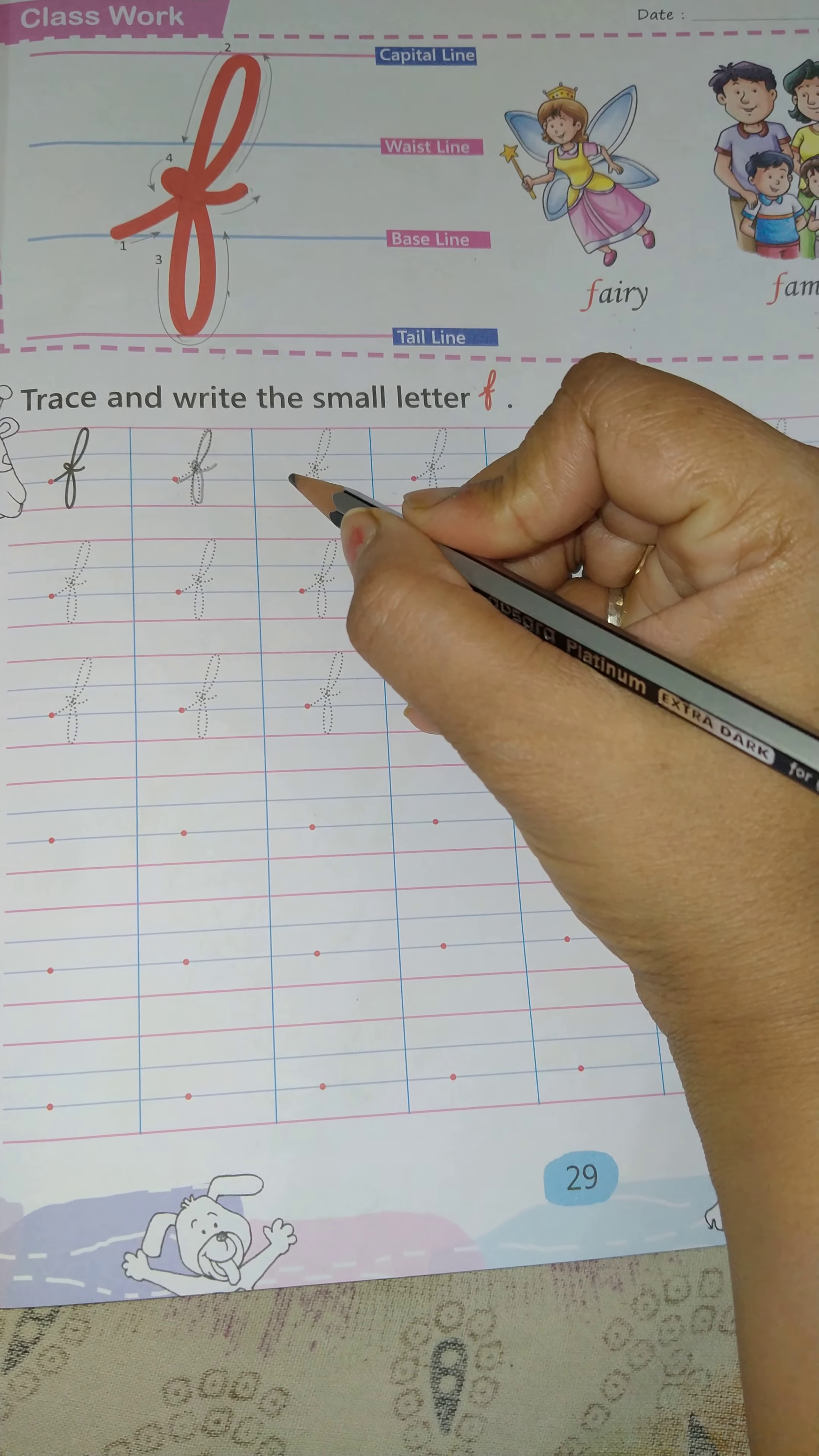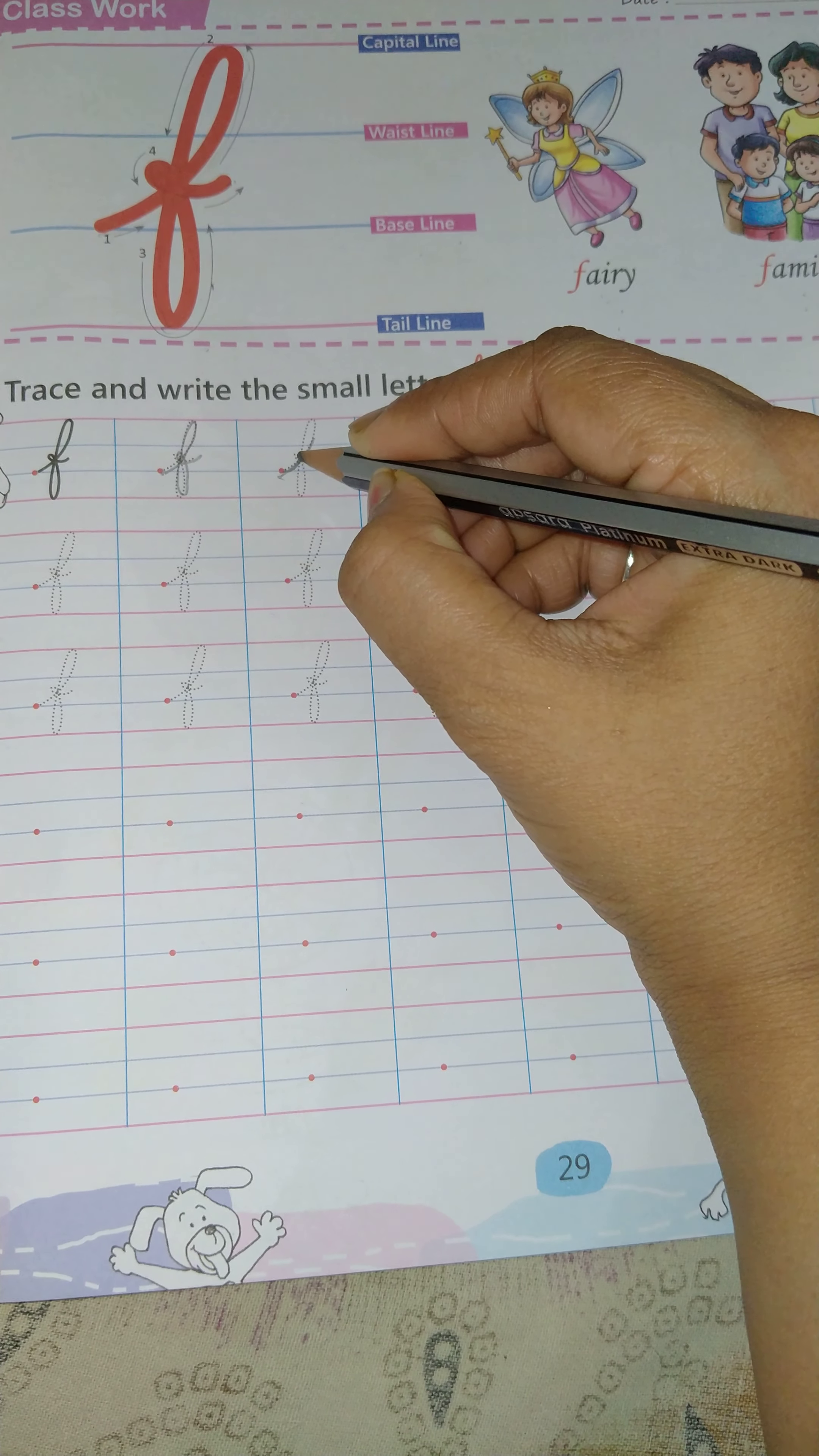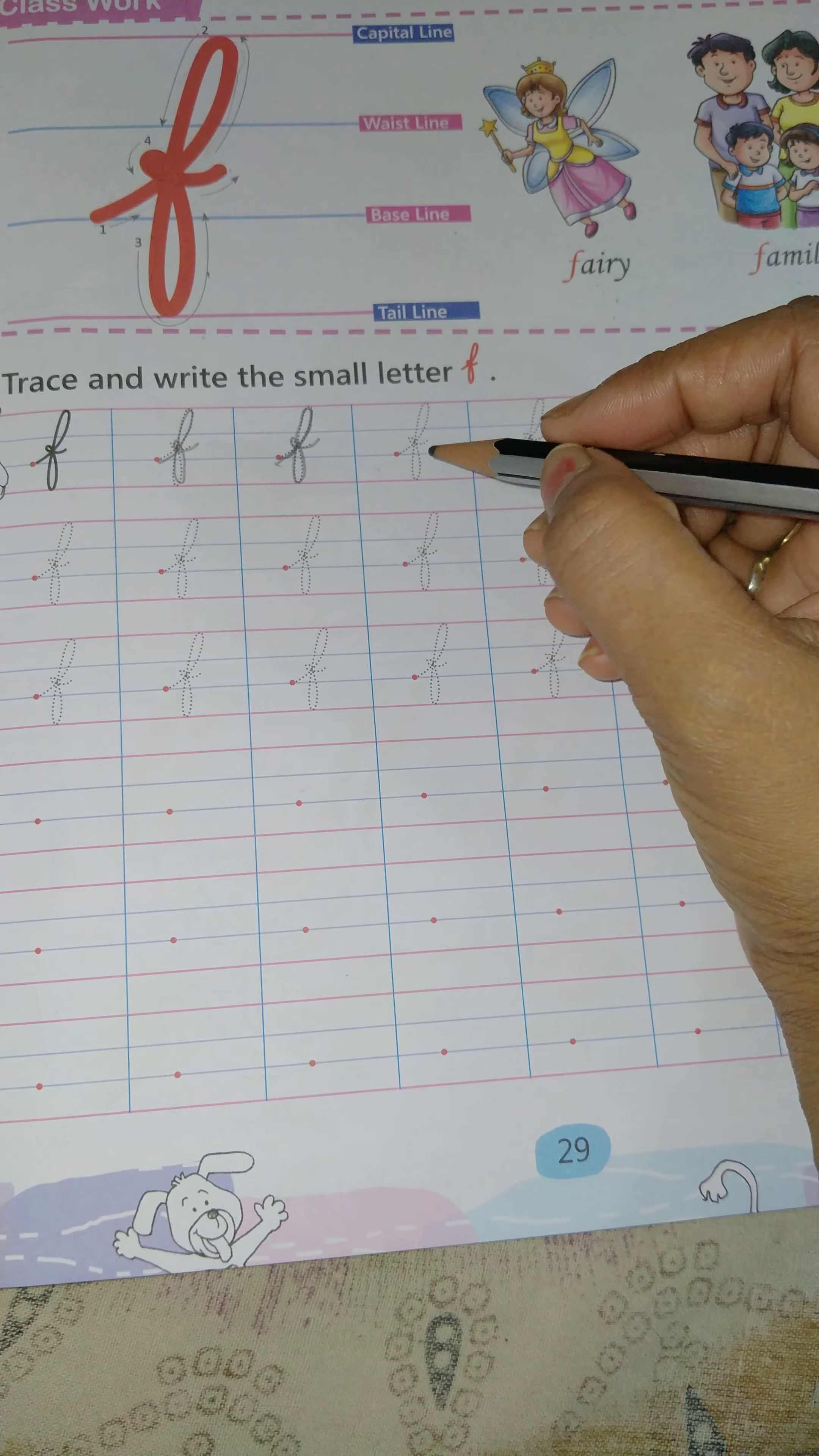Like this, one more time. From baseline we will start. Make your pencil. Don't lift the pencil. If you touch baseline, don't lift pencil. Up, capital line touch. Then down, touch the tail line. Between waistline and baseline, little curve like this.